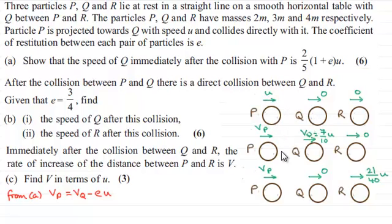We had to show that the final velocity of Q was 2/5(1 + E)u. That's after the first impact. And we were told that E equaled 3/4, so it gave us the final velocity after the first impact of Q as being 7/10 u.